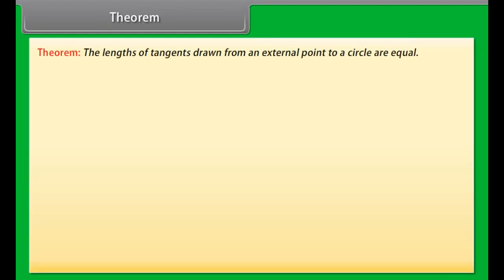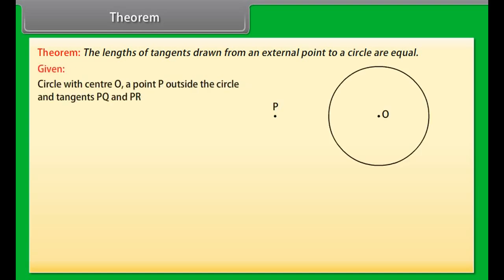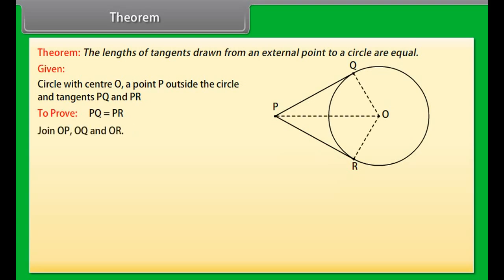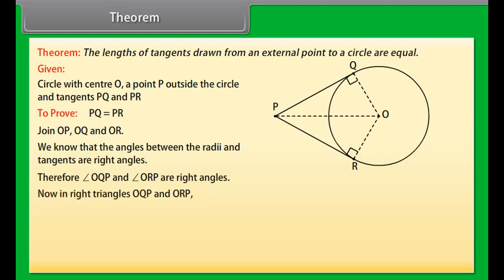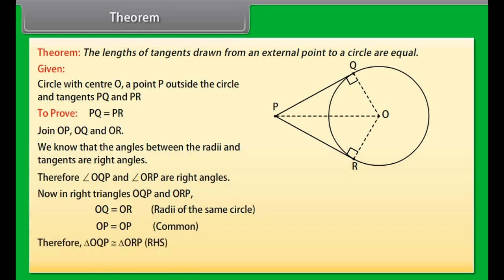Theorem: The lengths of tangents drawn from an external point to a circle are equal. We are given a circle with center O, a point P lying outside the circle, and two tangents PQ and PR on the circle from P. We need to prove that PQ is equal to PR. Join OP, OQ, and OR. The angles between the radii and tangents are right angles, so angle OQP and angle ORP are right angles. In right triangles OQP and ORP: OQ equals OR (radii of the same circle), and OP equals OP (common). Therefore by the RHS congruence rule, triangle OQP is congruent to triangle ORP, which gives PQ equal to PR.